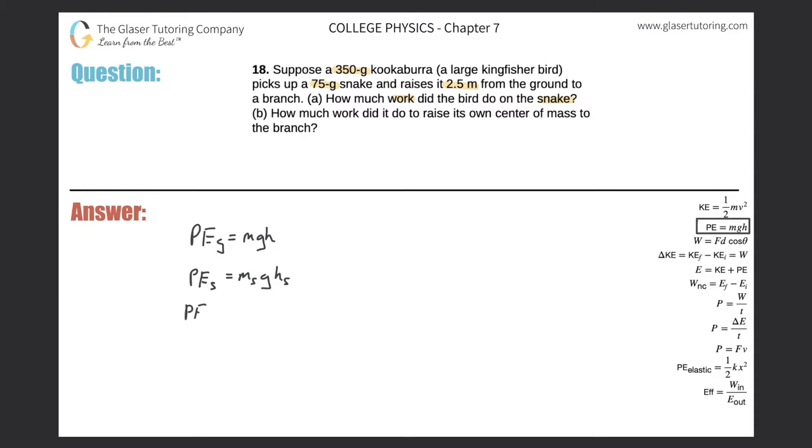So simply here, the mass of the snake was 75 grams, but remember, it's got to be in kilograms. So simply just move that decimal point three places to the left, or just divide it by a thousand. So 0.075, that'll be it in terms of kilograms.